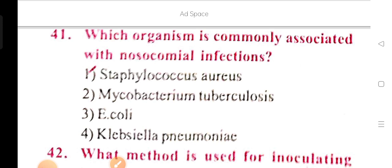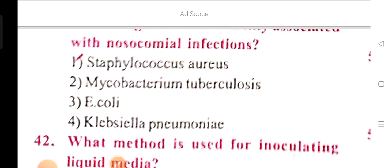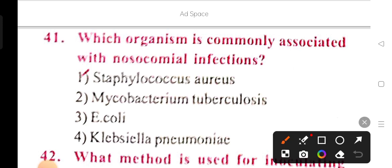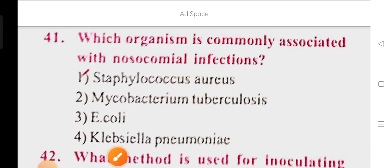Which organism is commonly associated with nosocomial infection? Nosocomial infection is a hospital-acquired infection that may be acquired through the hospital setting. We have options: Staphylococcus aureus, Mycobacterium tuberculosis, E.coli, and Klebsiella pneumoniae. Option 1 is the correct answer. Staphylococcus aureus is commonly associated with nosocomial infections, which are hospital-acquired infections mainly caused by Staphylococcus aureus.